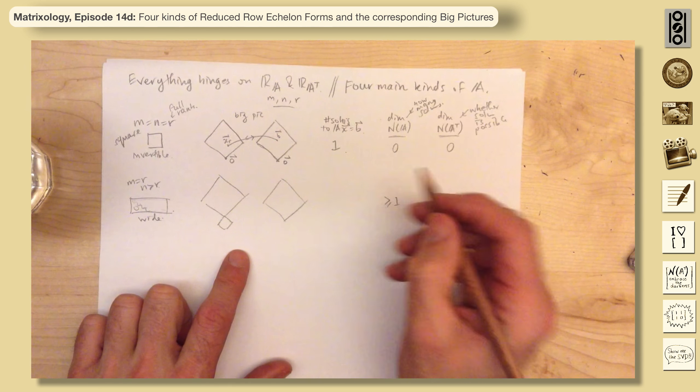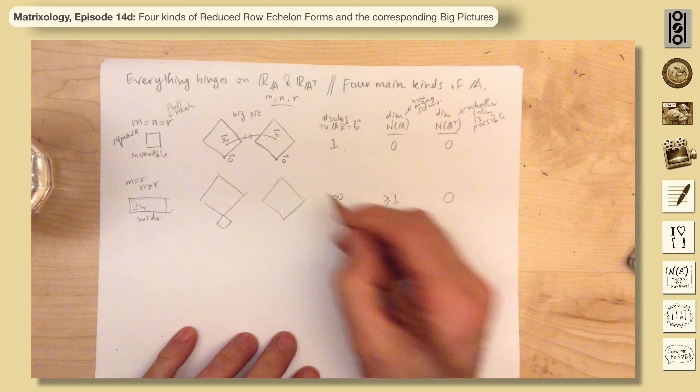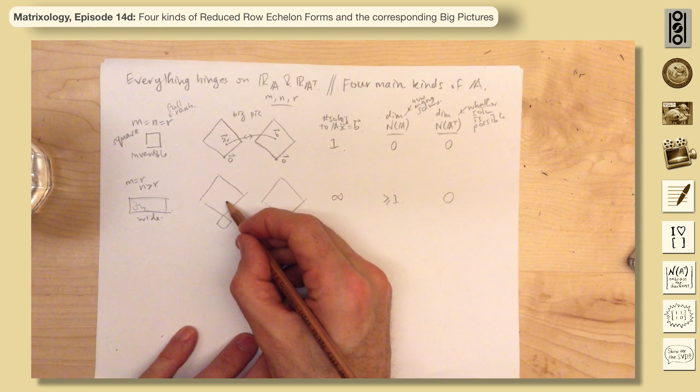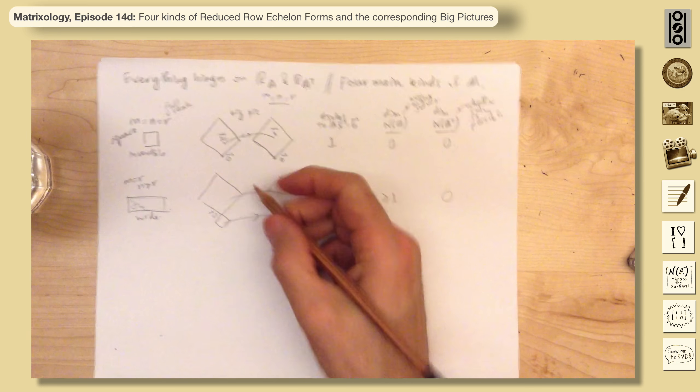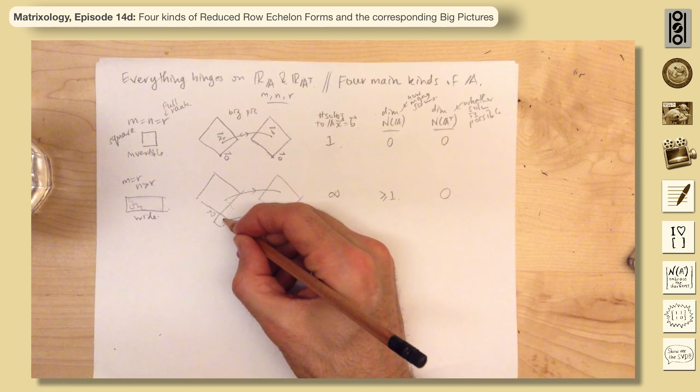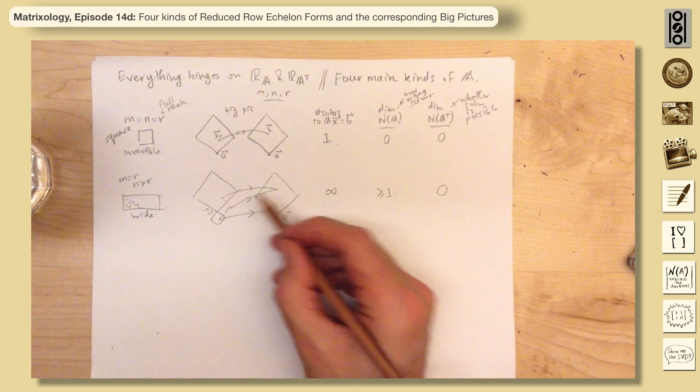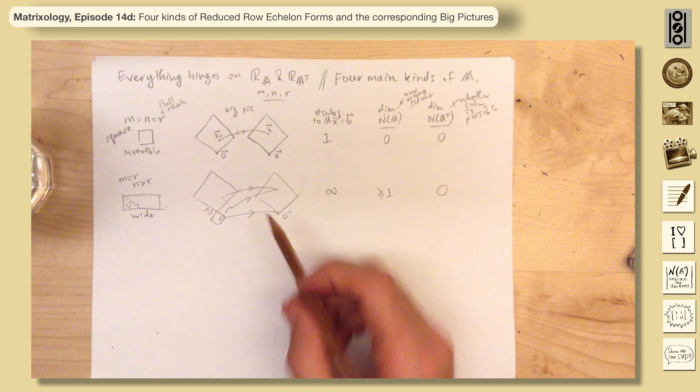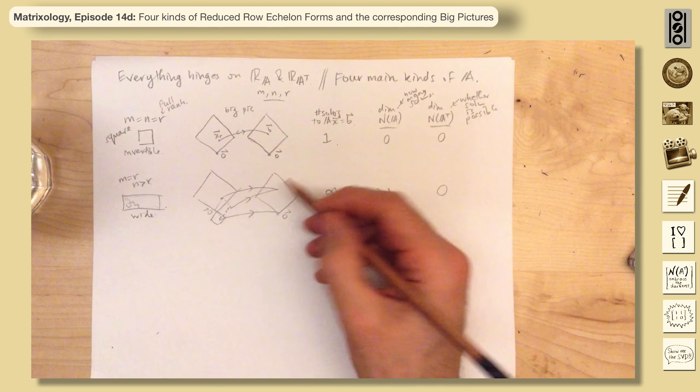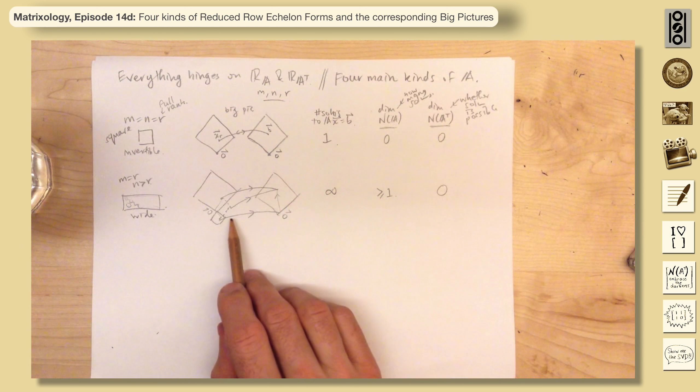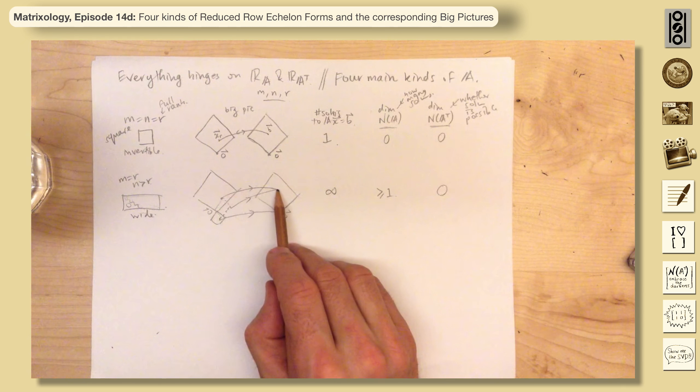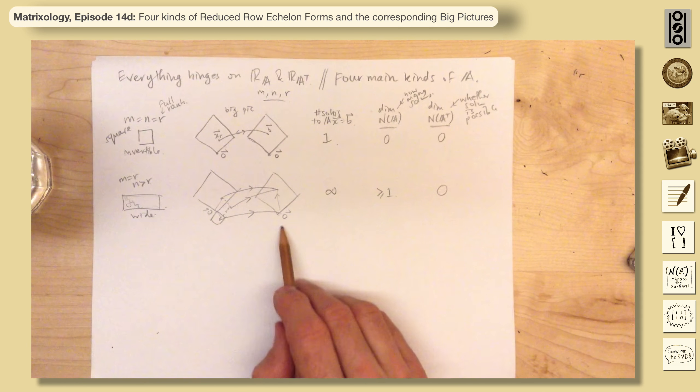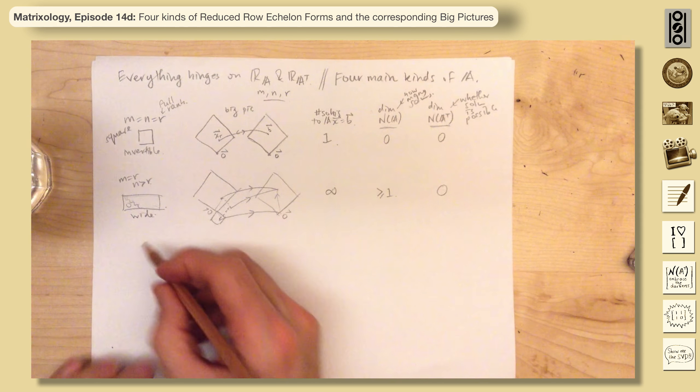So that means there are infinitely many solutions, always, because you kind of have this picture now. This gets sent over to zero. This is still zero. There are null space vectors. They get sent to zero. There's a specific row vector that will get sent to B. There's nothing you can't make. That's what this is showing. There's nothing you can't make.